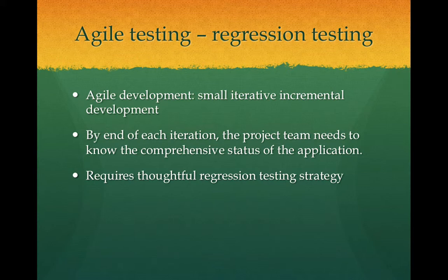When you're doing Agile development, by end of each iteration, the project team needs to know the comprehensive status of the application. This is another very important aspect of Agile development. We are making small incremental changes to the application, but it always has a potential impact to existing features or the application as a whole. So we need to make sure that we are truly making incremental change, and by having this checkpoint of the comprehensive status of the application, the project team can decide what to do next.